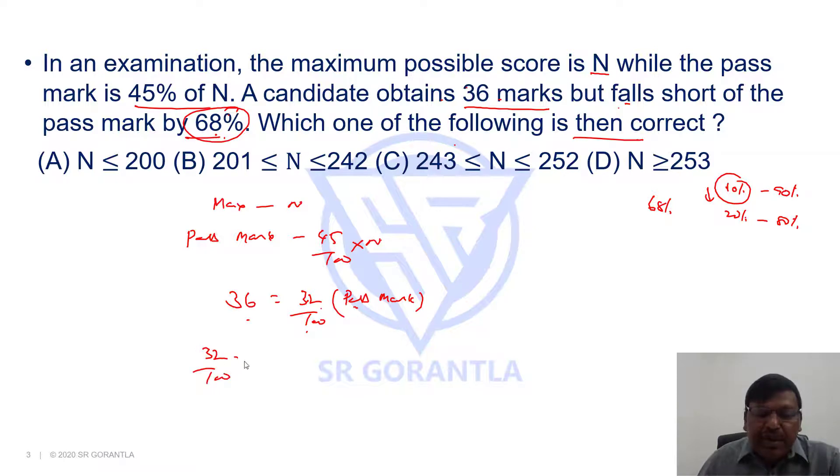32% of what is pass mark? 45% of N equals to 36.